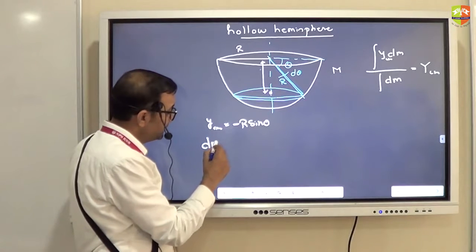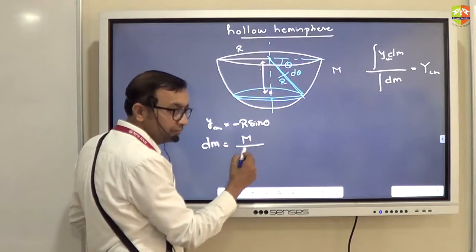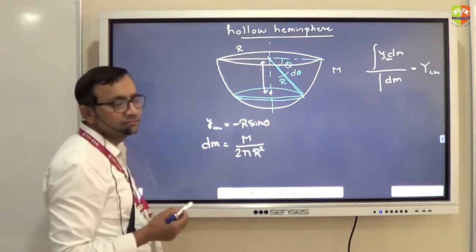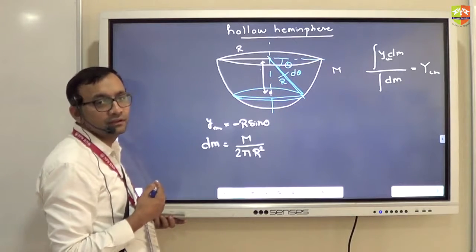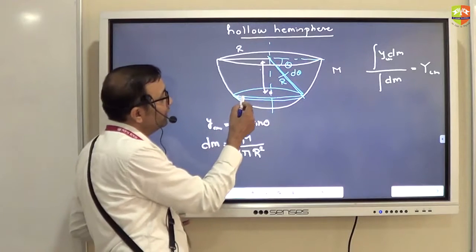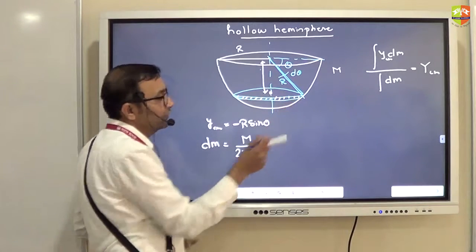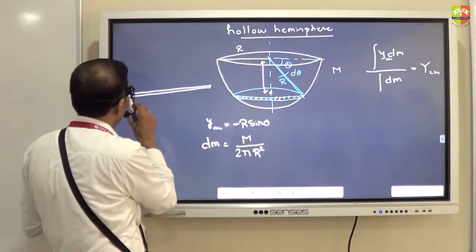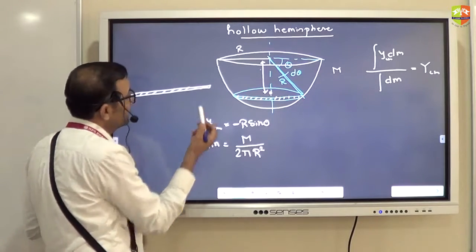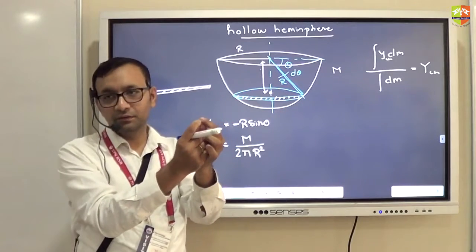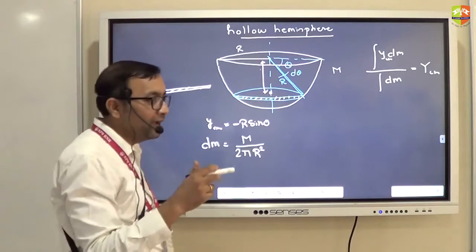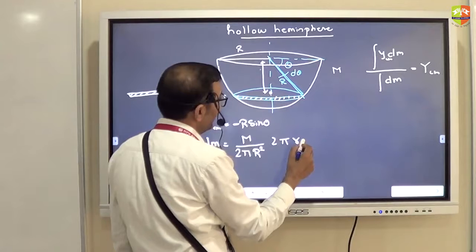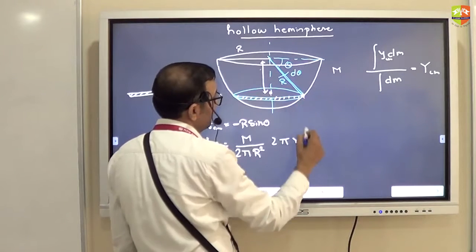The mass is distributed on area, so dm will be mass per unit area, which is m divided by 2πR². The surface area of the hemisphere is 2πR². So dm = (m / 2πR²) into the area of the ring. The area of the ring is 2π times small r times the thickness. The thickness is R dθ.